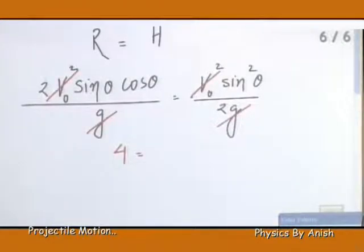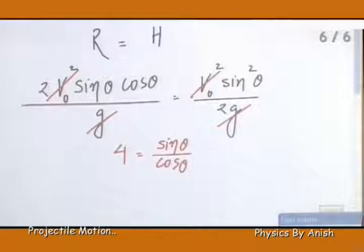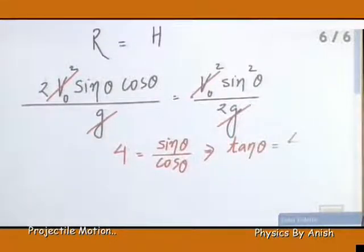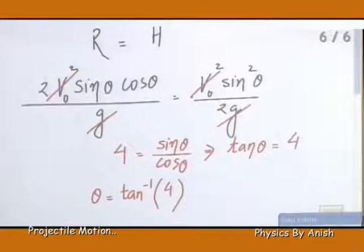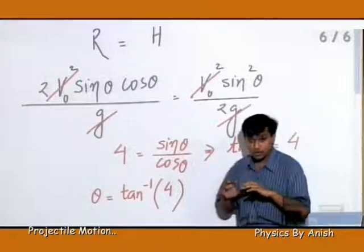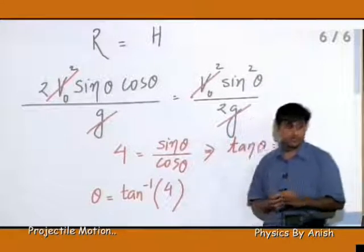2 into 2 gives 4. So theta is equal to tan inverse 4.